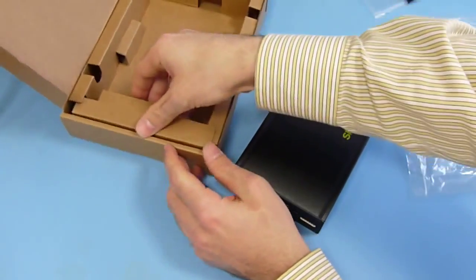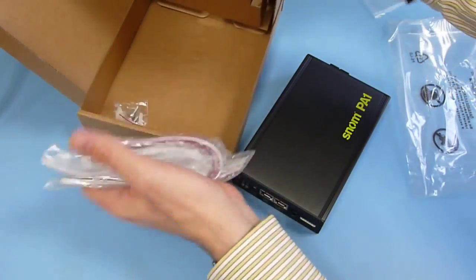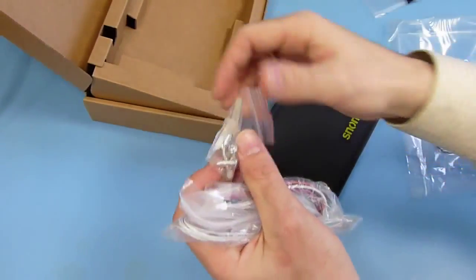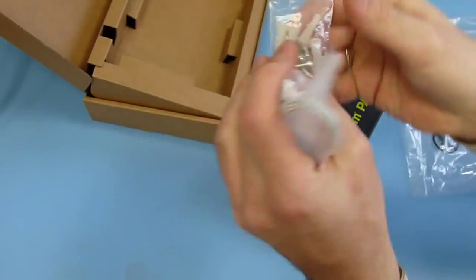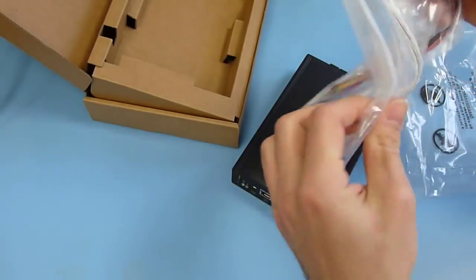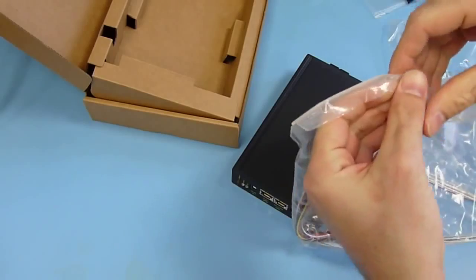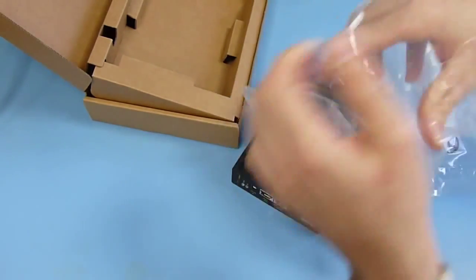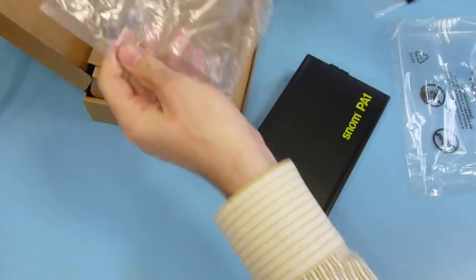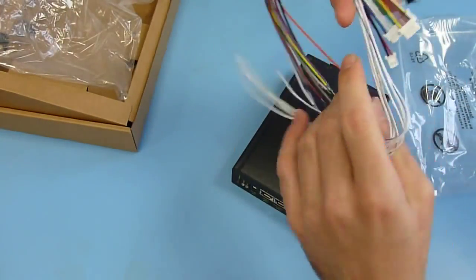So what else do we have in the box? We have screws here for the wall mount, four pieces. And we have a complete set of cables here. That is to extend the functions to further applications.